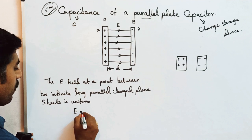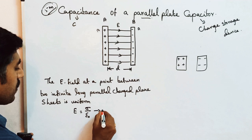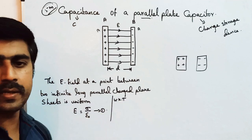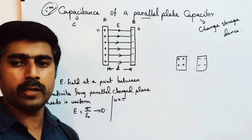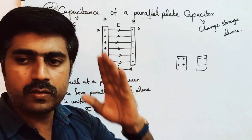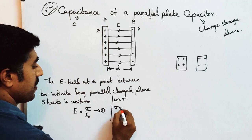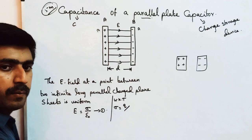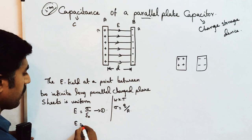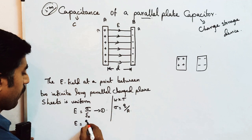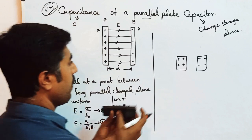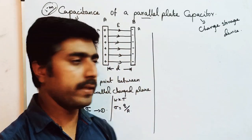Using Gauss's law — the third application, which is the electric field between two infinite long parallel charged plane sheets — the formula is E = σ/ε₀. This is equation number one. We know that σ is the surface charge density. The surface charge density σ = Q/A. Substituting, E = Q/(ε₀·A). This is equation number two.